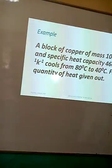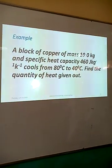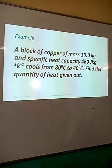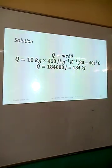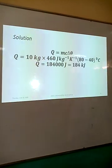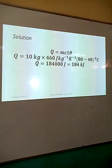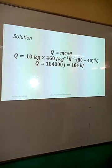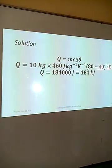Here is an example: a block of iron of mass 10 kg and specific heat capacity 460 Joules per kilogram per Kelvin cools from 80 to 40 degrees Celsius. Find the quantity of heat given out. Using Q equals mc delta theta: mass M is 10 kg, c is 460 J/kg/K, and delta theta is 80 minus 40 equals 40 K. Note that the change in temperature is the higher value minus the lower value, since temperature is a scalar quantity. This gives Q equals 184,000 Joules, or 184 kilojoules.